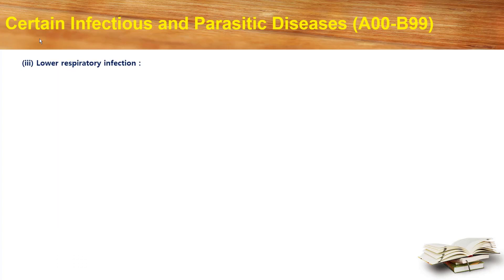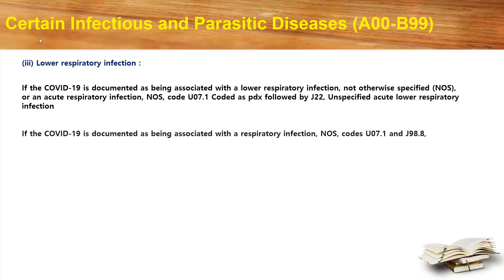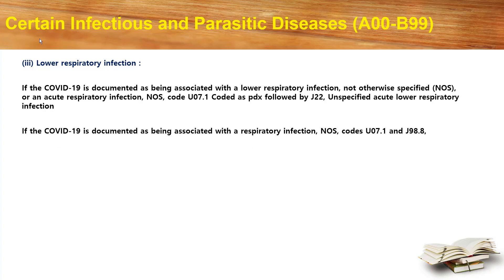Let's move into lower respiratory infection, that is LRI. If COVID-19 is documented as being associated with a lower respiratory infection not otherwise specified, or acute respiratory infection not otherwise specified, code U07.1 as primary diagnosis followed by J22, that is unspecified acute lower respiratory infection. If COVID-19 is documented as being associated with respiratory infection not otherwise specified, assign U07.1 and J98.8, that is other specified respiratory disorders.